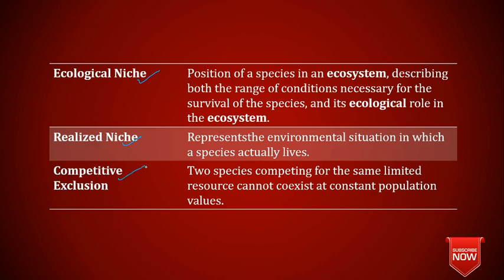Competitive exclusion says that if two species are present — suppose species A and species B — and they both survive on the same fruit, there will always be competition. One species will always face a problem in surviving. Competitive exclusion states that two species competing for the same limited resource cannot co-exist at constant population values. One species will survive, and the other will disappear or move elsewhere. This is the competitive exclusion principle.